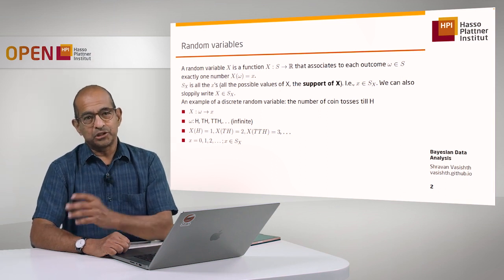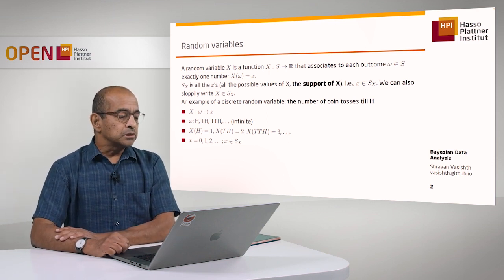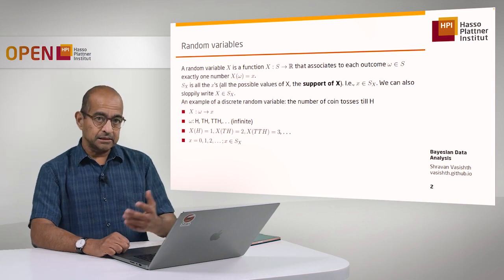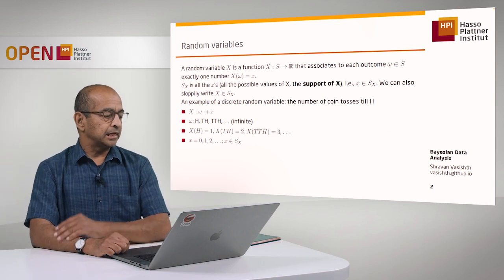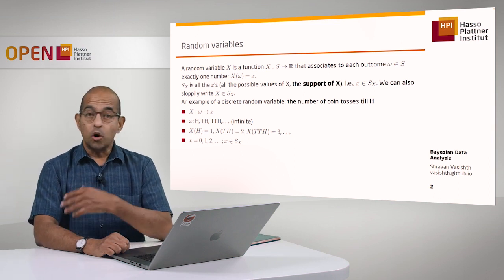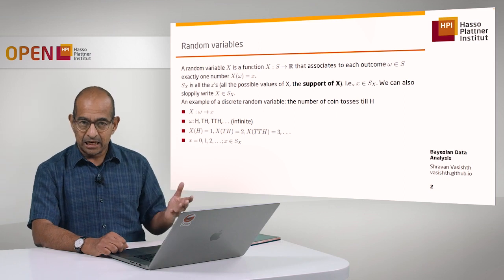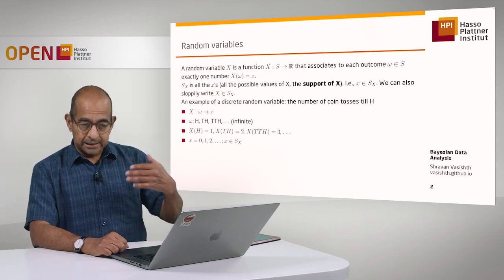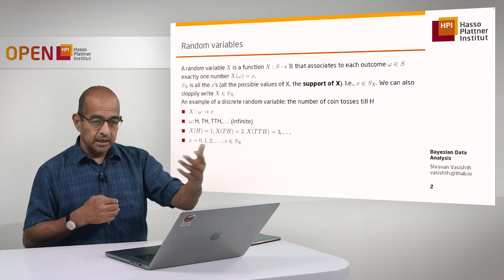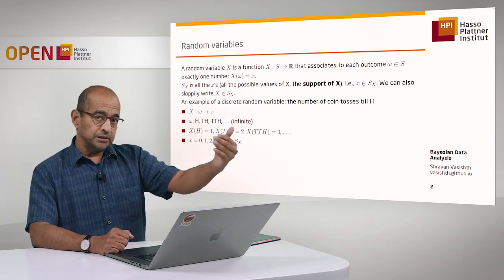As an example, suppose we toss a coin repeatedly until we get a heads. We might toss it once and get heads, or get tails and then heads, or tails, tails, then heads, and so on. There's a set of events that can happen — it's an infinite set because you could keep getting tails and only get heads after a very large number of tosses.